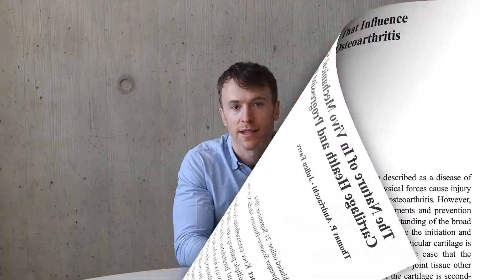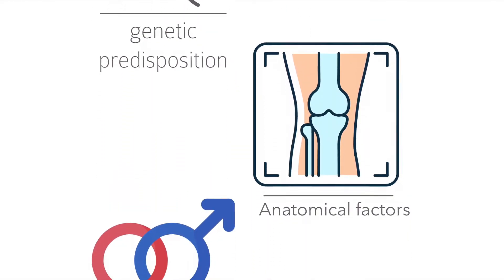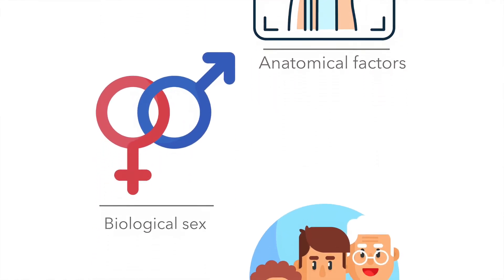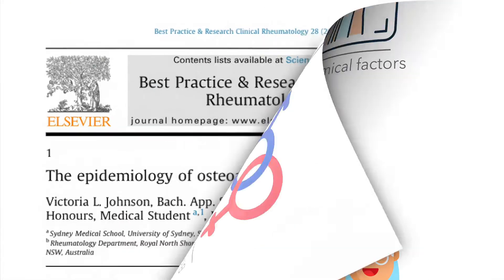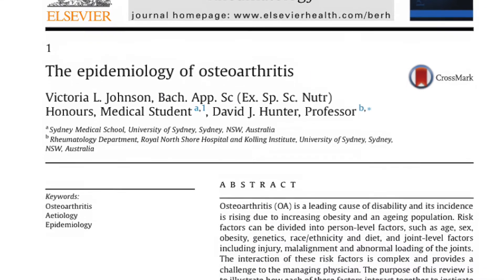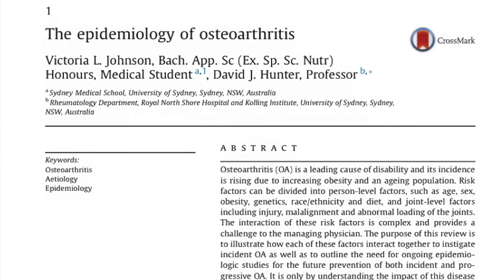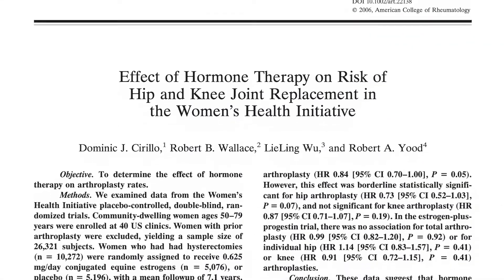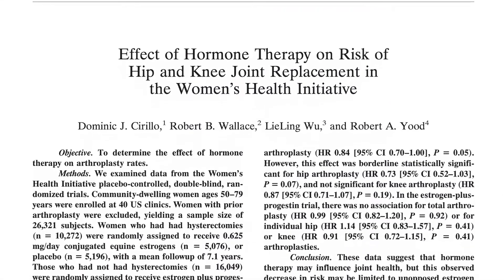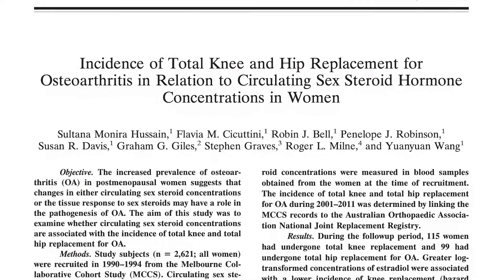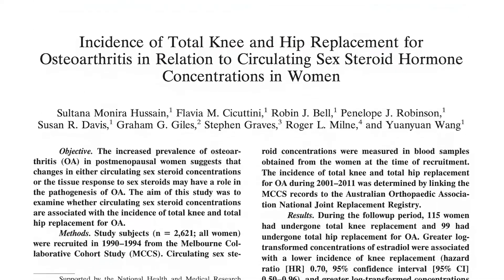A person's sex can also play a role. Osteoarthritis of the hands and knees is more common in women than men, while hip OA is equally prevalent between the sexes. There is some evidence to suggest that loss of estrogen during the post-menopausal years could also be a contributing factor.